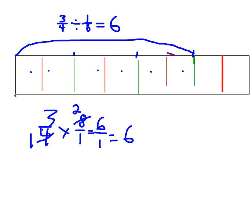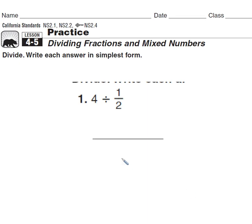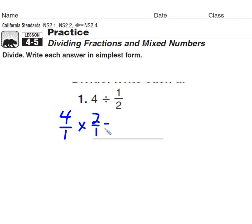We're going to convert all dividing fraction problems into multiplying fraction problems by writing the inverse operation. For example, 4 divided by 1/2: write 4 as 4/1. Then 4/1 divided by 1/2 is the same as 4/1 times 2/1. Change the operation, invert the fraction, and that's 8/1, or simply 8.